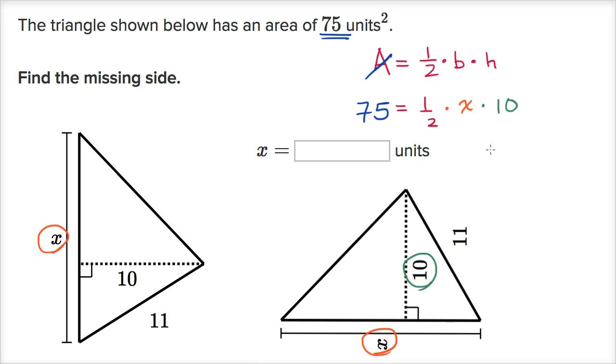So 75 is equal to 1/2 times x times 10. Or, let me just rewrite it this way. We could say 75 is equal to 1/2 times 10 is equal to 5 times x. So what is x going to be?